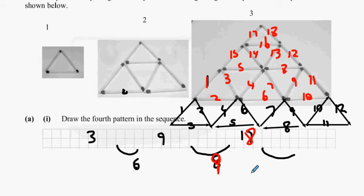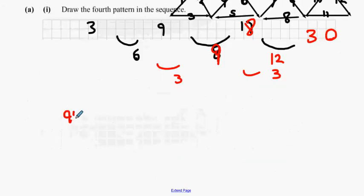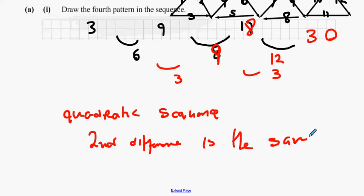That's a gap of three, so that means the next gap should be twelve. And the next gap — it was actually your eighteen plus your twelve which gives you thirty. This is indicative of a quadratic sequence — we did this at junior cert level — because the second difference is the same.